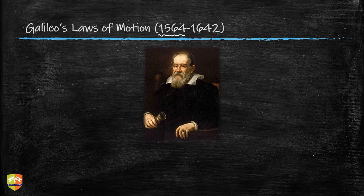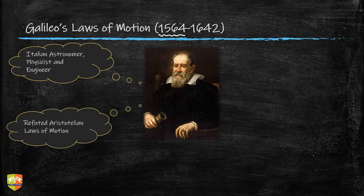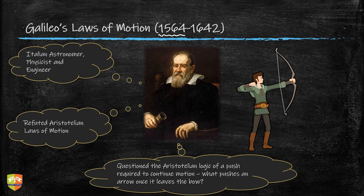Then came Galileo. Till the 15th or 16th century there was not much development in the laws of motion. This was the time of the Renaissance in Europe, when established beliefs were being challenged. Galileo — an Italian astronomer, physicist, and engineer — challenged Aristotelian laws of motion. He asked the key question: if a push is required to continue motion, then what pushes an arrow once it leaves the bow? What keeps the arrow moving along its path after the archer releases the string?